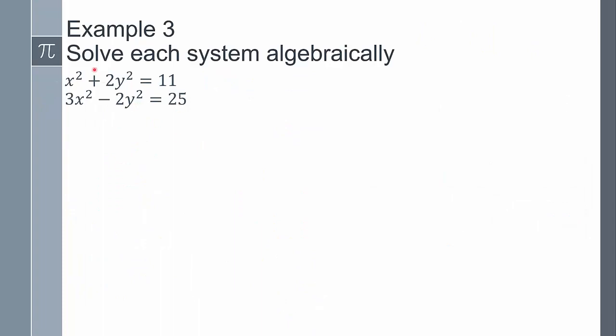Our third and last example: solve each system algebraically. This looks different — there's no variable by itself, and getting one by itself would be difficult because we'd get awkward square roots. For example, isolating x squared would give the square root of 11 minus 2y squared. That's awkward. So while the substitution method would still work, it's not optimal. Instead, we'll use the elimination method.